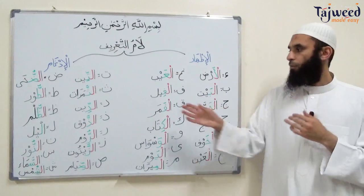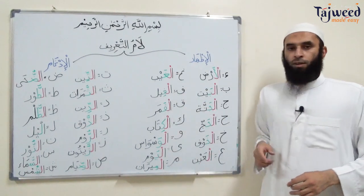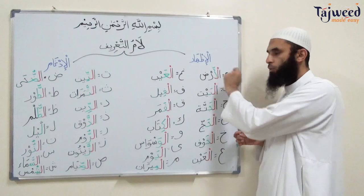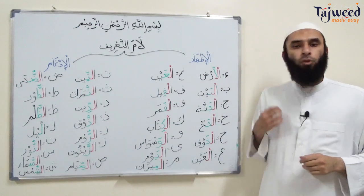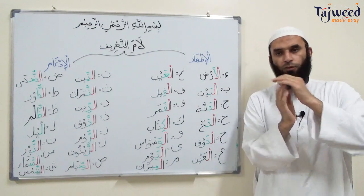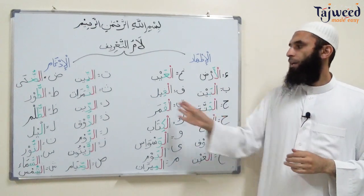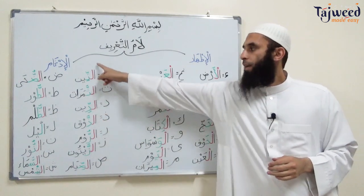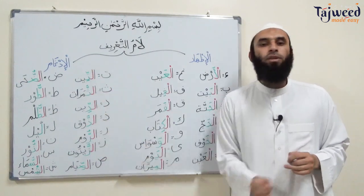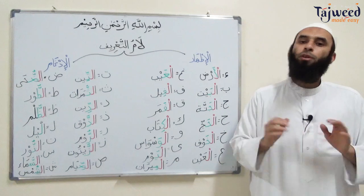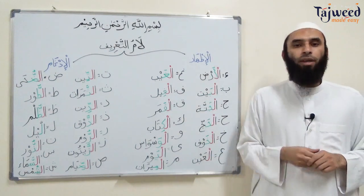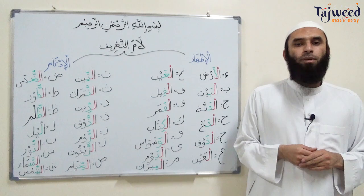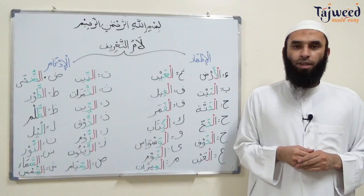To summarise لام التعريف: with the 14 moon letters, the لام will have a sukun and be pronounced clearly (edge of tongue to roof of mouth). With the other 14 sun letters, the لام is still written but without a sukun, the following letter has a شدّة, and the لام is not pronounced. This is لام التعريف.